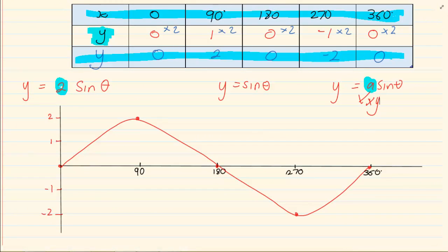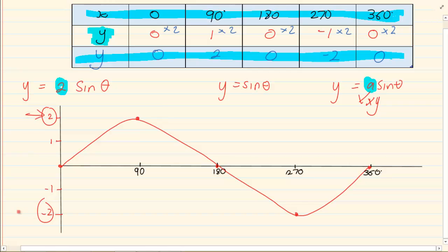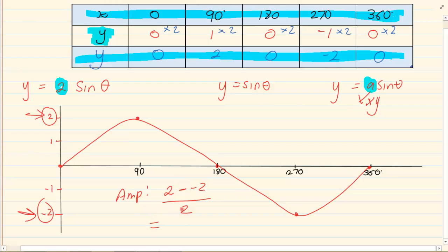Looking back at the first graph (y = 2 sin θ), the range would have been from minus 2 to 2. The maximum would have been 2 and the minimum minus 2. The amplitude is maximum minus minimum divided by 2, so it's 2 plus 2 which is 4, divided by 2, which gives me 2. So the amplitude of that graph is 2.